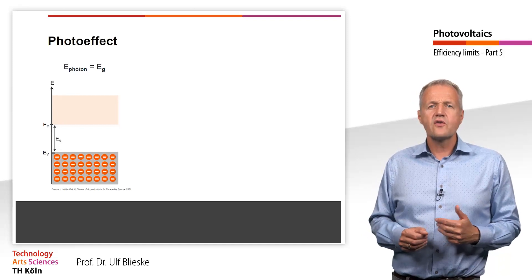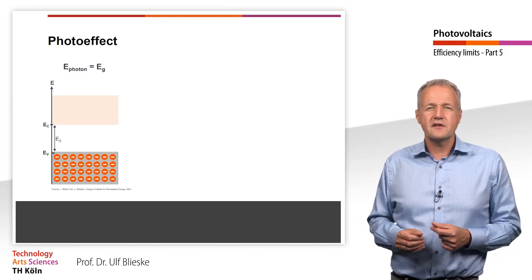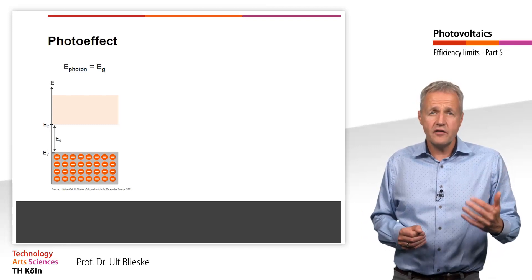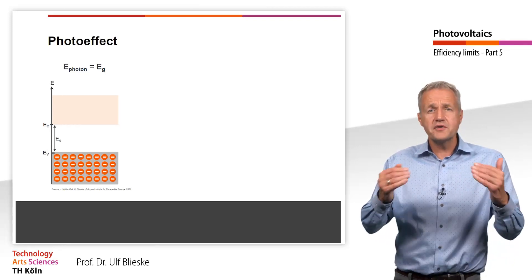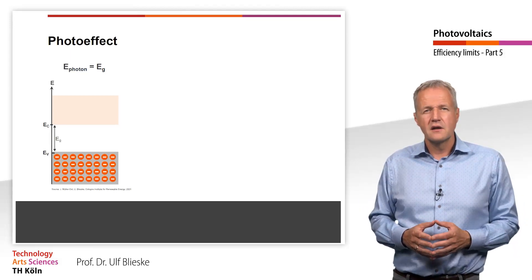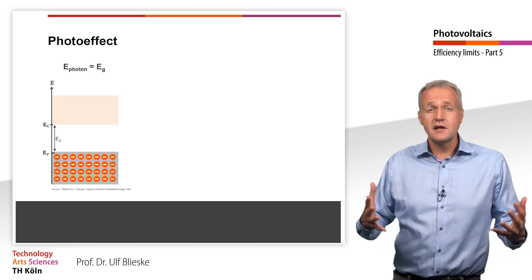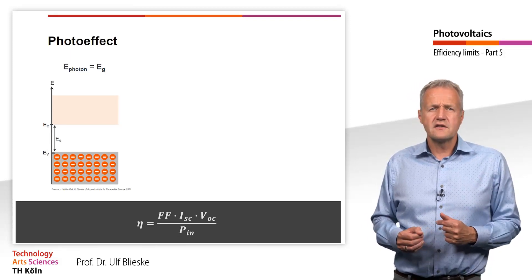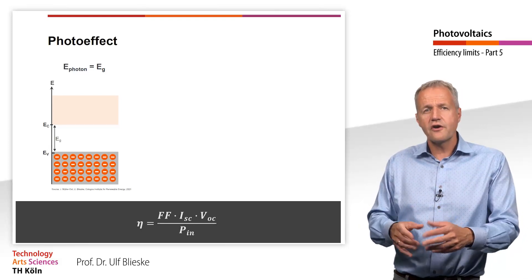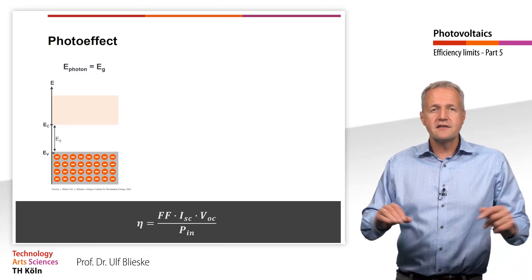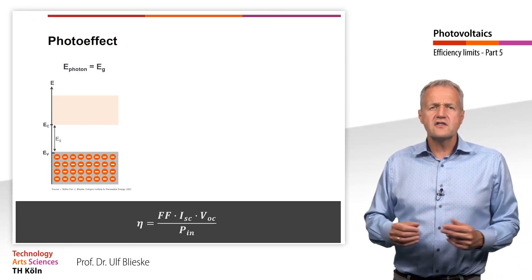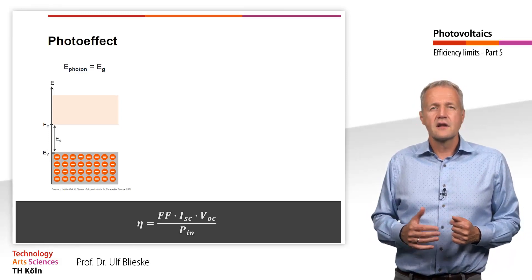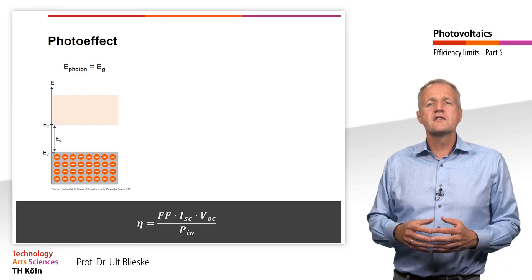In the last teaching unit, we got to know all the essential parameters that describe the electrical behavior of a solar cell. In addition to all these parameters, the quality of a solar cell also depends on how well it comes up to the maximum possible efficiency. Let us first deal with what are the physically achievable limits for the degree of efficiency. As we have already learned, the efficiency results from the product of the fill factor, short-circuit current and open-circuit voltage divided by the incident radiated power. The efficiency is therefore largely determined by the open-circuit voltage and the short-circuit current, and the limits of these two values are important for the limits of efficiency.